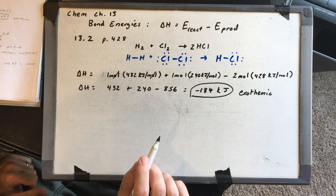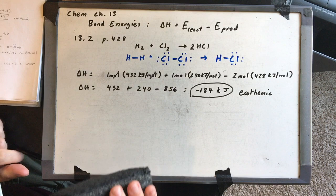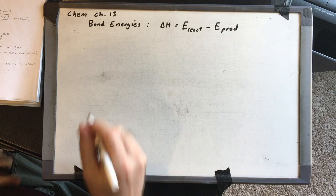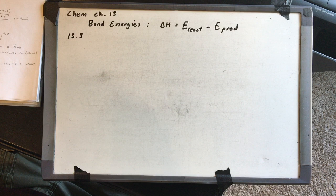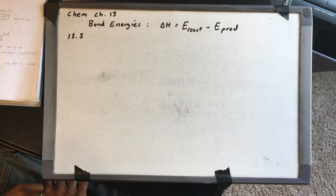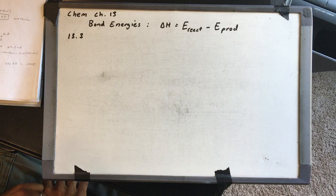Pause the video if you're still writing. For 13.3: in an acetylene torch, C2H2 is burned to make the hot blue flame that cuts or welds metal. Assuming complete combustion, what is the delta H of this reaction? In a complete combustion reaction, C2H2 plus O2 yields CO2 plus H2O.